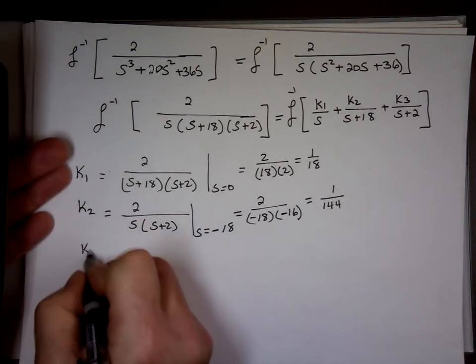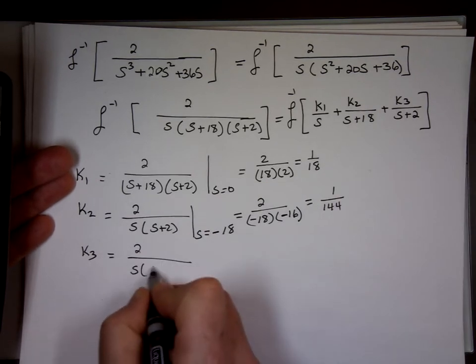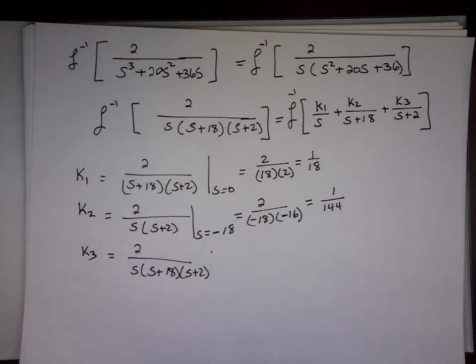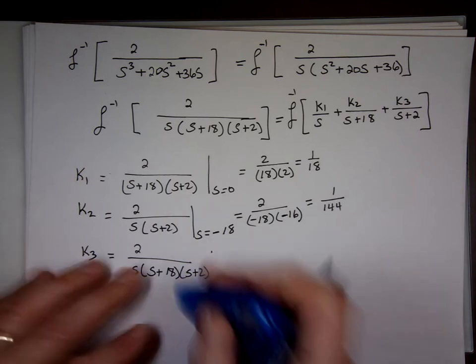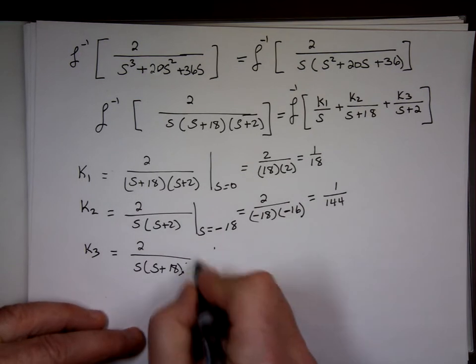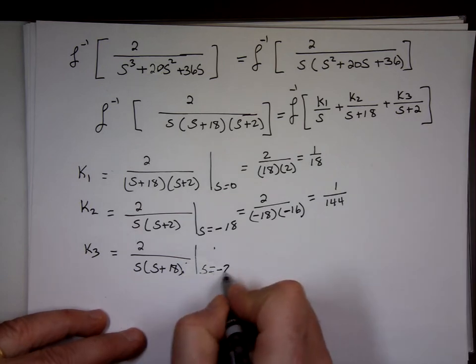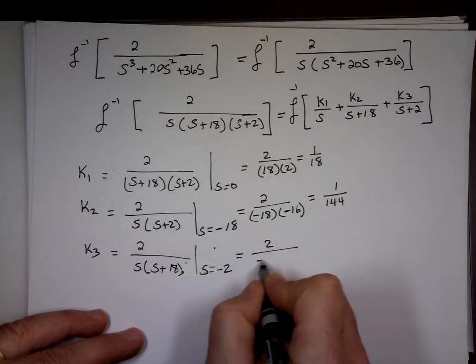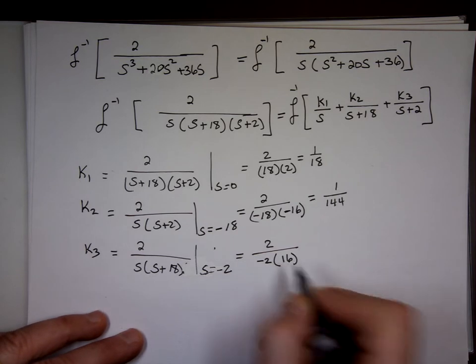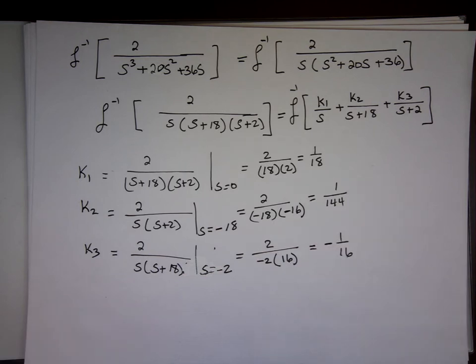And what's K3? K3 sitting on top of S+2. Take the S+2 out of it, when S equals what? Negative 2. Negative 2 plus 18 is that 16. What's that? Negative 1/16.